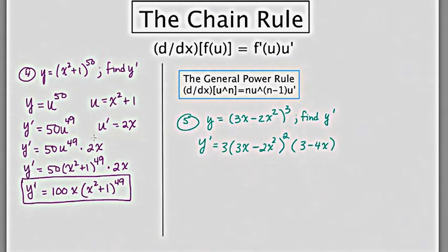That's really in essence what we're doing here, but this is just a little bit quicker. This is the general power rule. Cleaning this up now, we have 3 times 3 minus 4x times 3x minus 2x squared, all of that squared.